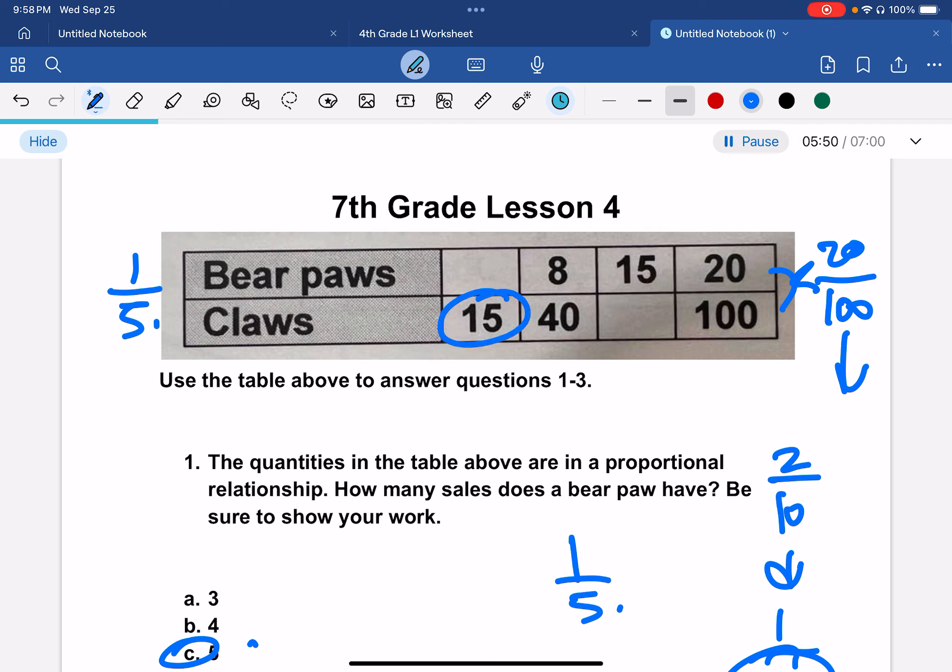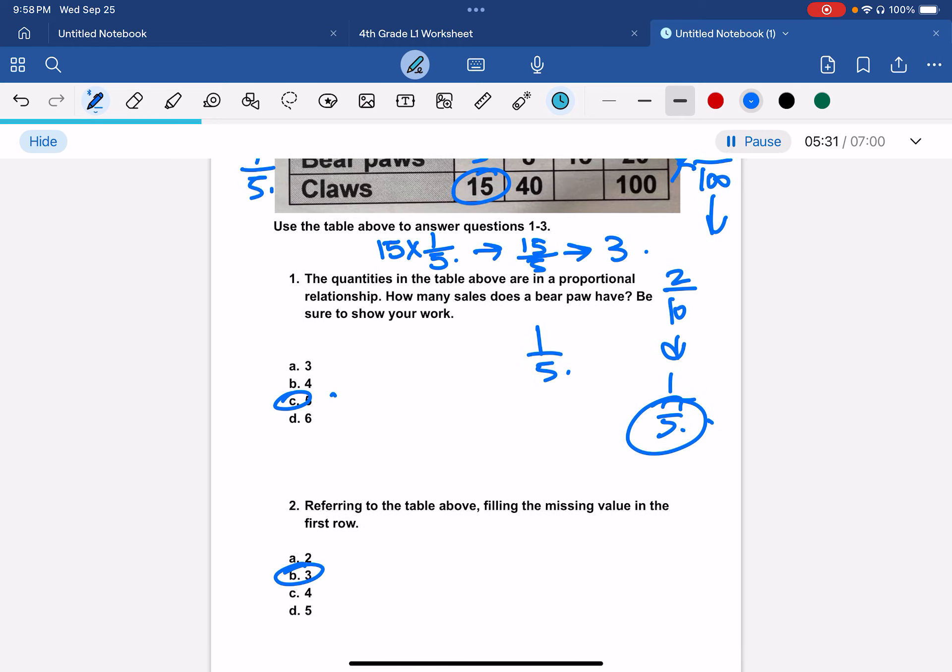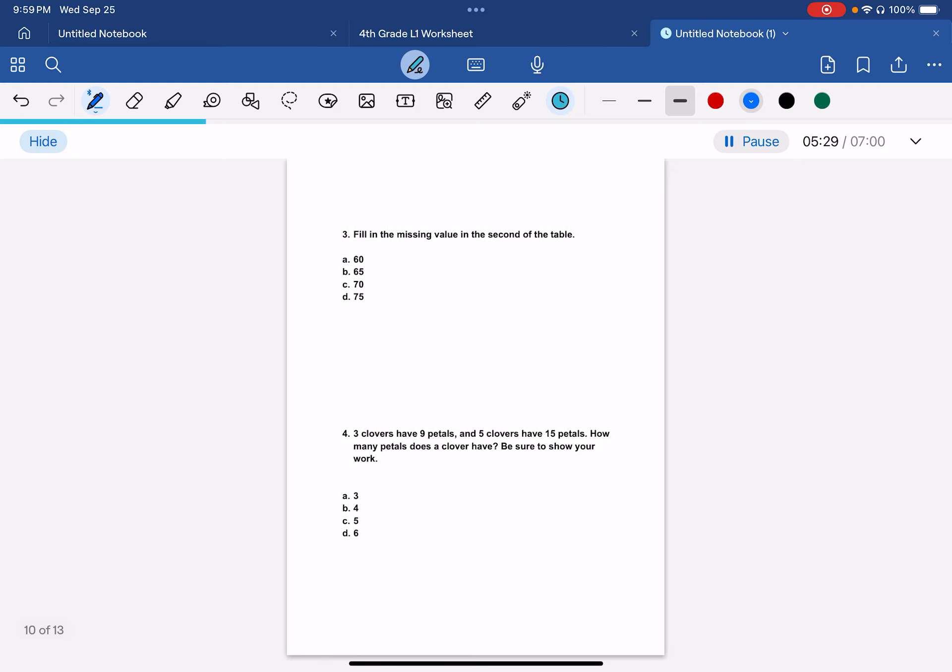So for this one, we can just do 15 times 1 over 5. That would get us 15 over 5, which would be 3. So that would be b.